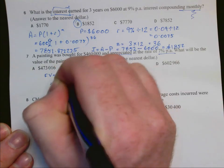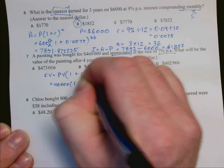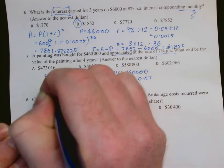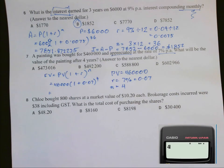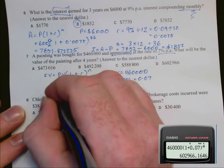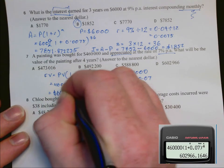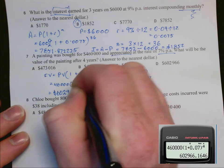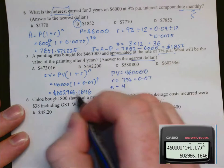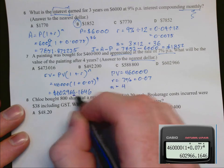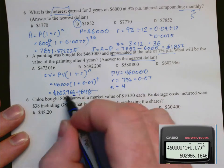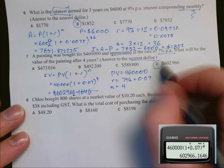So again, substitute that into the formula and use a calculator. We get 602,966 dollars and 16 cents. To the nearest dollar, we would round off here. This is less than five, so that goes. 602,966 is our answer, which is D.